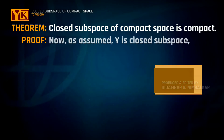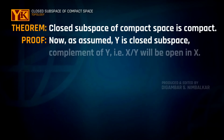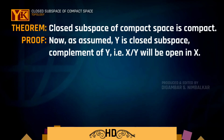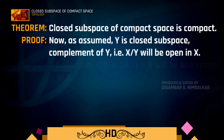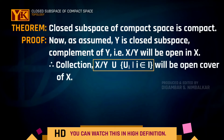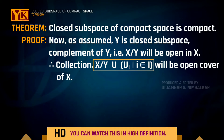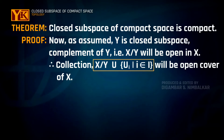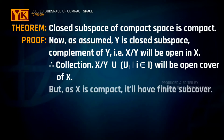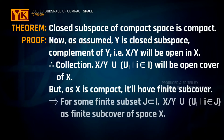Now, as we have assumed Y is closed, the complement of Y — that is, X minus Y — will be an open subset of X. Therefore, this open set, together with all Ui's, will form an open cover for space X. Since X is compact, it will also have a finite subcover.